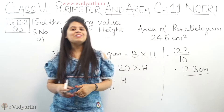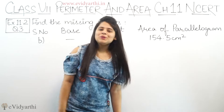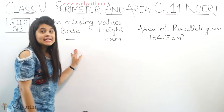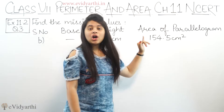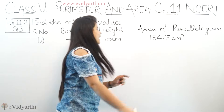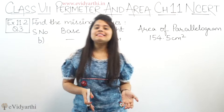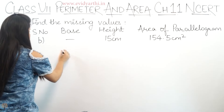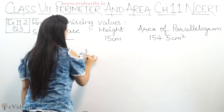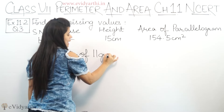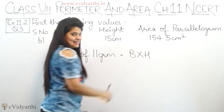So this was part A. Now let's come to the next part, part B. In part B, you can see base is not given to us. Height is given, and area of parallelogram is given. So again, just like we found height in part A, similarly here we will find the base. So first write the formula: area of parallelogram is base multiplied by height.